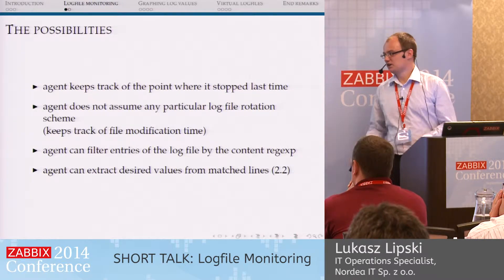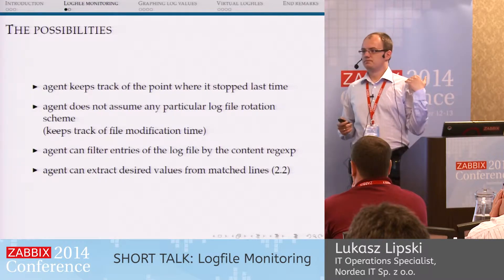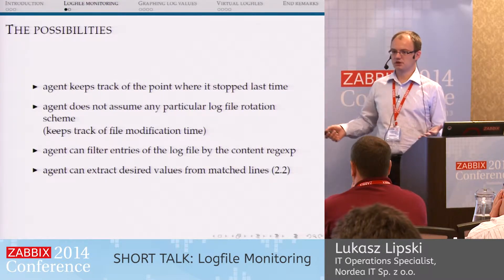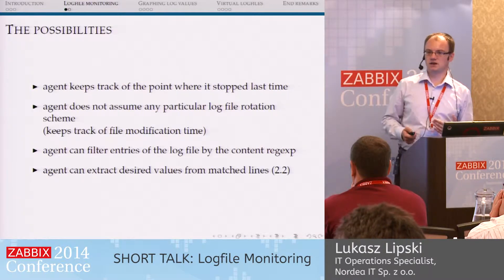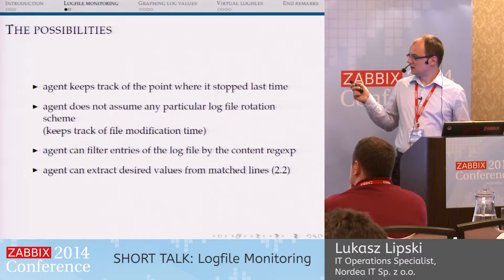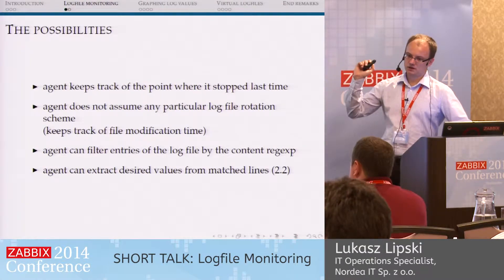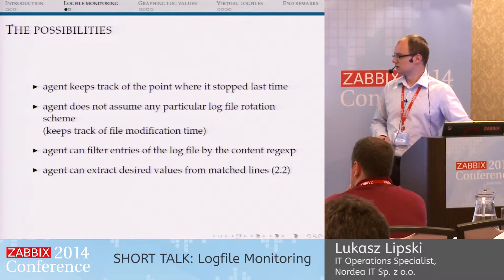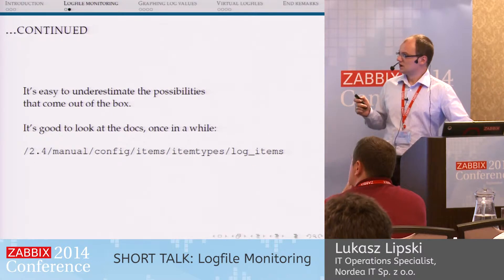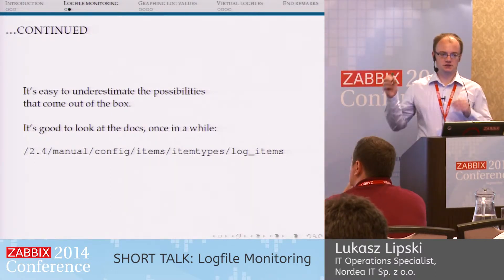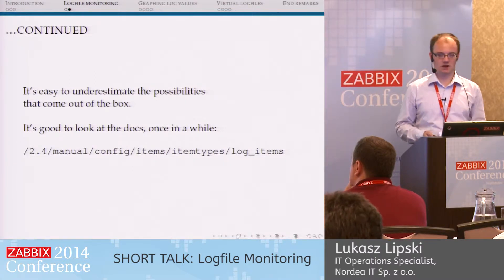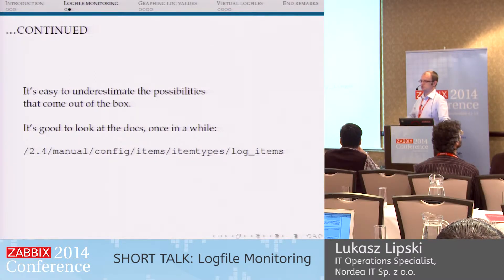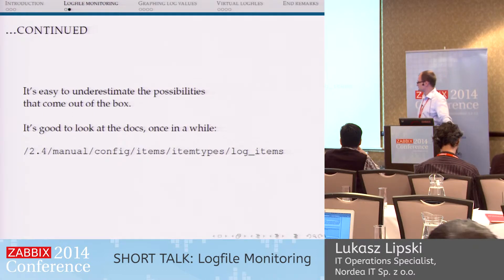So if your file name changes, if your file name matches a pattern and there are multiple files within the directory, it's all taken care of out of the box. And since version 2.2, you can also apply a regexp to a log line and extract a specific value, which is very useful for many purposes. The suggestion I want to get across is that it's very easy to underestimate the possibilities you've already got inside Zabbix, and it's always better to stick with a ready-made tool than to roll your own log parsing system. It's good to look at the documentation once in a while.